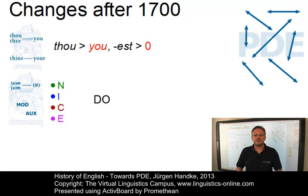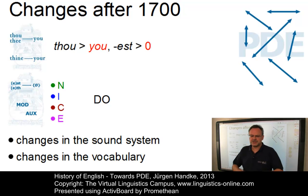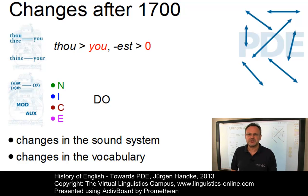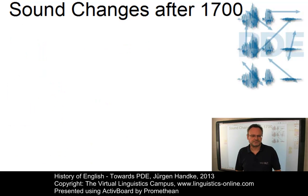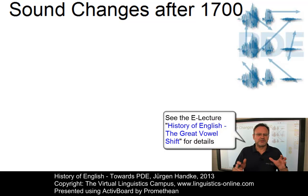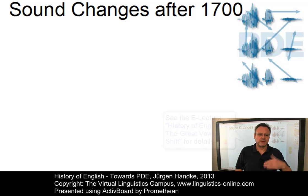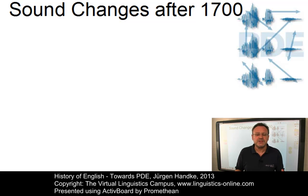Nevertheless, a number of changes between early modern English and present-day English need further consideration. These concern changes in the sound system and changes in the vocabulary. So let's briefly look at some sound changes that affected the English language after 1700. In general, the sound system of present-day English was established by the end of the early modern English period, when the great vowel shift was completed in most varieties of English. Most changes since early modern English have been allophonic rather than phonemic.